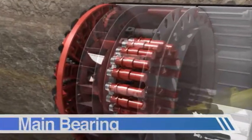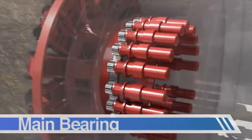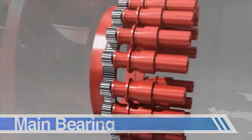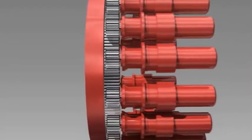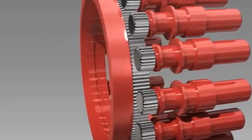The cutter head structure is supported by a large three-row roller bearing, and the rotation of the cutter head is produced by the action of several electric motors driven simultaneously.